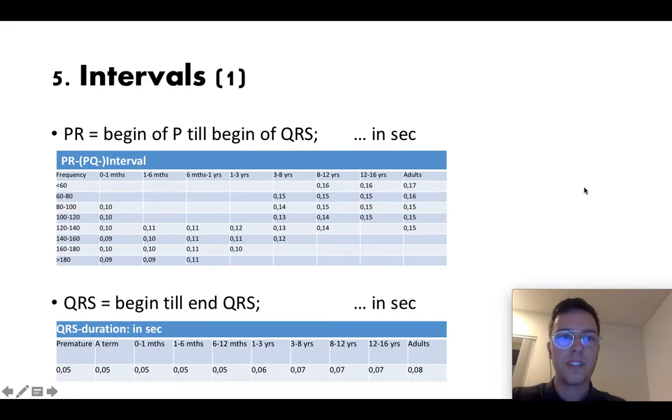So then we look at step five, the intervals. Check what PR is. That's the beginning from P till the beginning of QRS and note that time in seconds, and you can check here if your values are normal values. And here check QRS which is the beginning of QRS till the end of QRS and also note that time in seconds. Here I put the normal values for all ages.